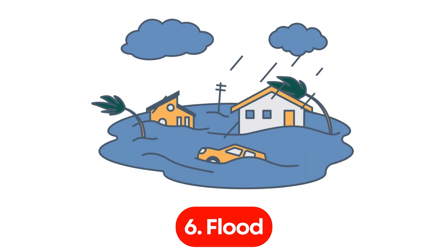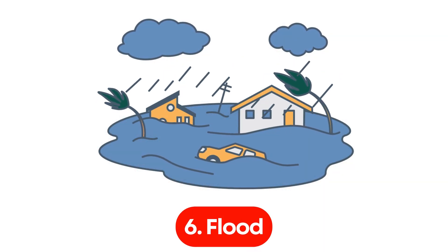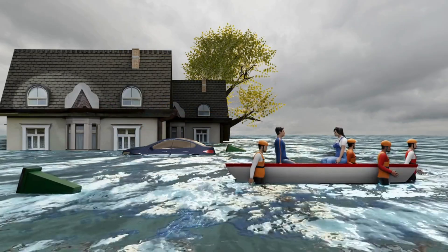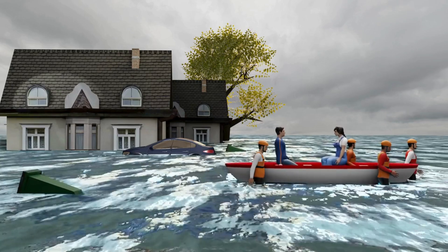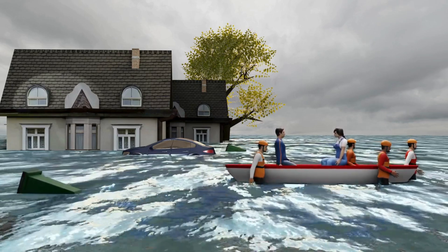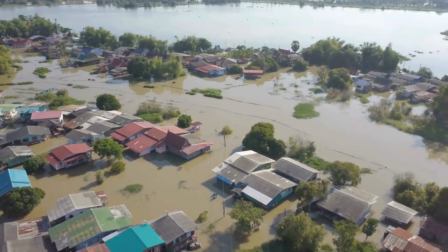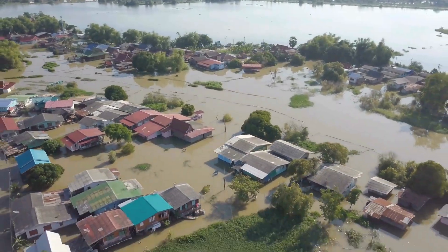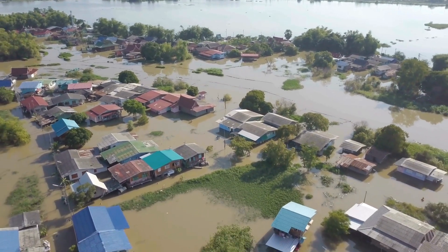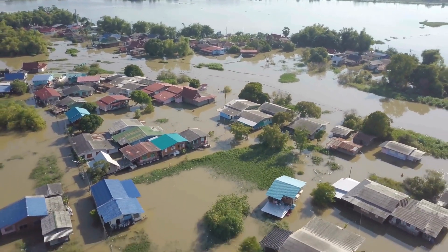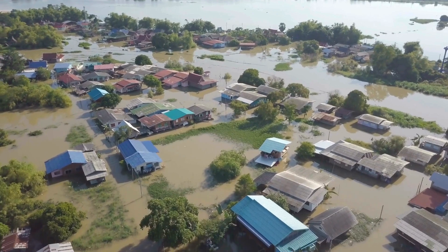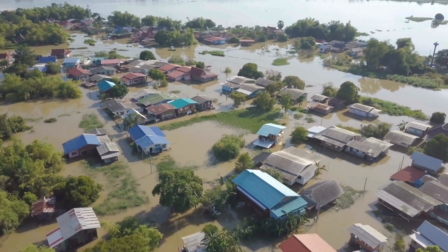Number 6. Flood. Floods happen when water overflows onto normally dry land due to heavy rainfall, snow melt, or dams breaking. Floods can drown entire communities, damage crops, and contaminate water supplies.